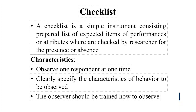A checklist is a simple instrument consisting of a prepared list of expected items of performance or attributes, which are checked by the researcher for presence or absence. For example, a preoperative checklist used in nursing: whether preoperative consent was obtained — yes or no; whether dentures were removed — yes or no; whether pre-op medications were given — yes or no; whether skin preparation was done — yes or no.